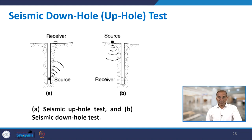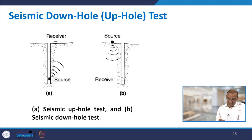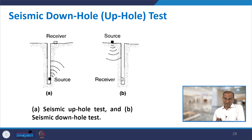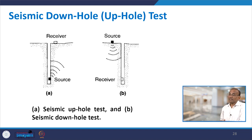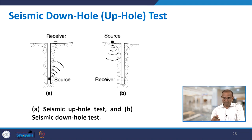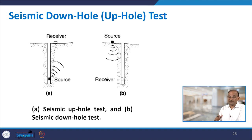Looking at the seismic down hole and up hole setup: instead of the cross hole configuration requiring at least two boreholes, only one borehole is used. In the up hole case the receiver is at the ground surface; in the down hole case the receiver is inside the borehole. Whatever is inside the borehole — whether source or receiver — is the component that moves. In the up hole test the receiver is fixed at the surface and you can have multiple receivers connected.